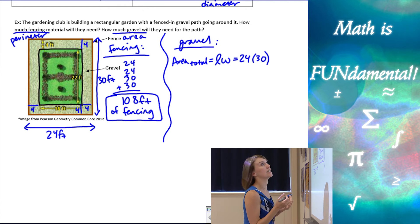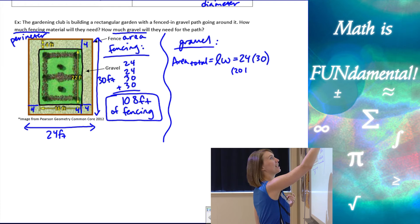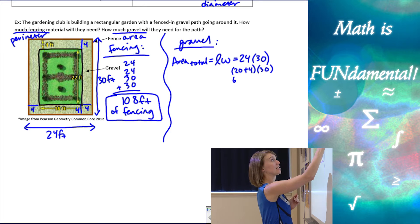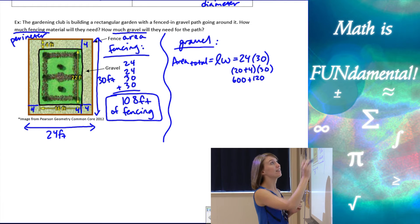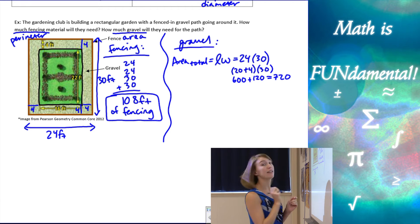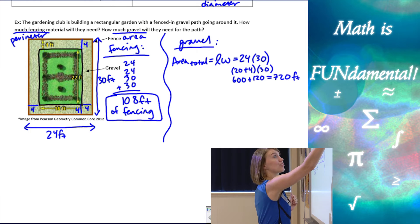So 24 times 30. I've got 20 plus four and I have times 30, and I'm just going to distribute that in. Two times three is six, that's 600 plus 120. So that's going to give me 720. And it's area, so we have to remember to square our units, feet squared.